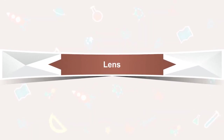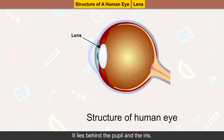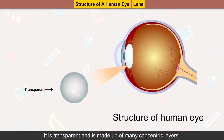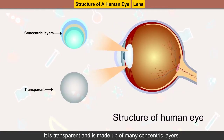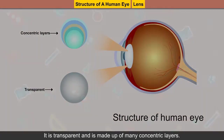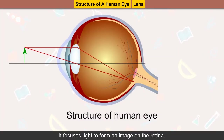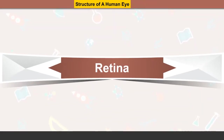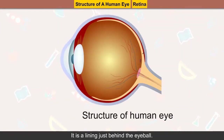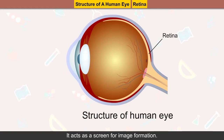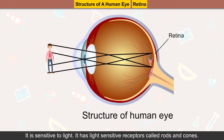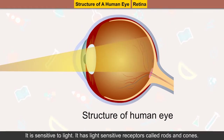Lens: it lies behind the pupil and the iris. It is transparent and made up of many concentric layers. It focuses light to form an image on the retina. Retina: it lies just behind the eyeball and acts as a screen for image formation. It is sensitive to light.